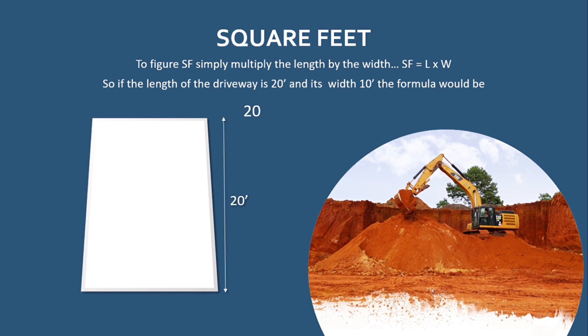Square feet is the simplest of the problems we will encounter. It's basically length times the width. In this example here, we're saying you have a concrete slab, let's say it's 10 foot by 20 foot. So you would simply take the length of 20 foot, multiply it by the width of 10 foot. That would give you 200 square feet. That's how square foot works.